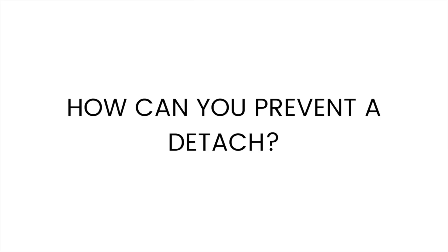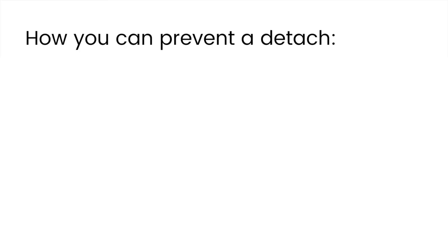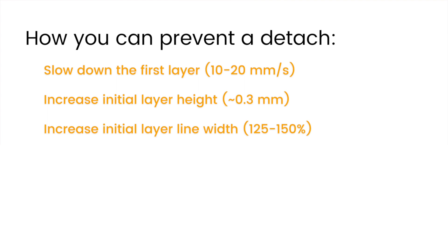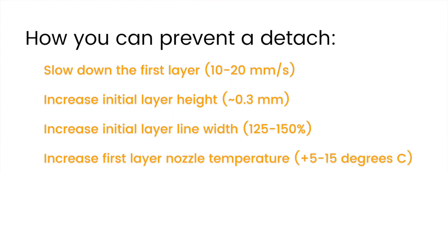So what can you do to prevent detaches from happening on your 3D prints? The best thing you can do is improve your bed adhesion, and that usually comes down to your first layer. Slow down your first layer — I use 10 millimeters per second on every print and my first layers are usually pretty good. You can also increase your layer height and line width on your first layer, which makes the molten plastic stay molten for longer and helps everything stick to the bed better. You can also try increasing your nozzle temperature a little more than normal just for your first layer, making sure the plastic is super molten so it sticks down really well.